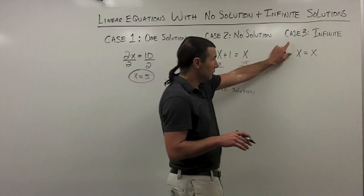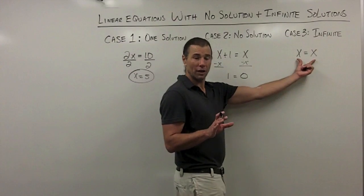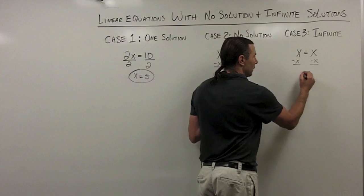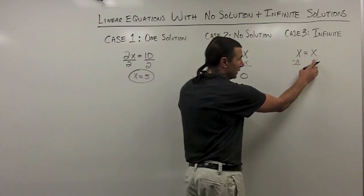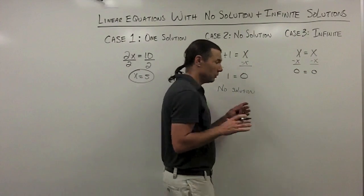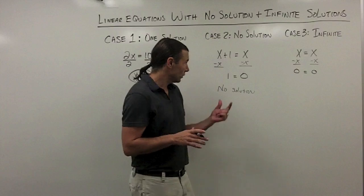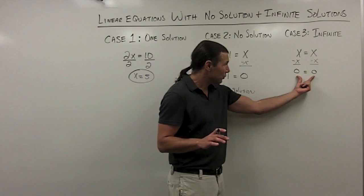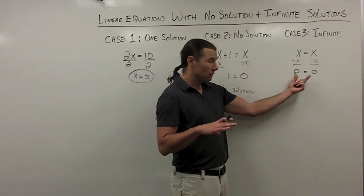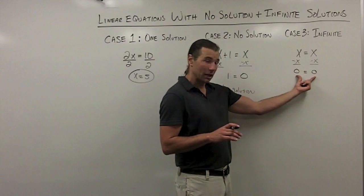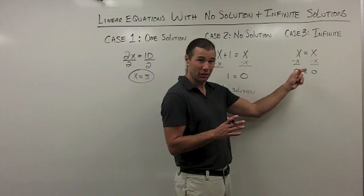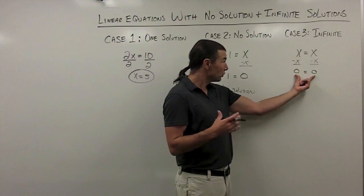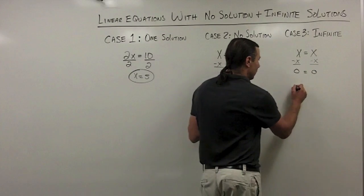Let's take a look at case 3 — infinite solutions. Again, I have variables on both sides, so I subtract x from each side. On the right side, x minus x is 0. On the left side, x minus x is 0. All of the variables drop out. Notice the difference from the no solution case: when I have an infinite solution case, I have a true statement — 0 does equal 0. When variables drop out and I have a true statement, that means both sides of the equation were exactly the same. We call this an identity, and we're left with infinite solutions.